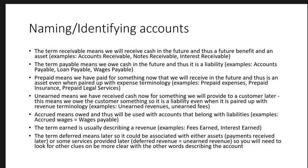'Prepaid' means we're going to pay for something now and receive the benefit in the future, so it's usually an asset even if it's paired up with the word 'expense.' 'Unearned' means we receive cash now and have to provide services or goods later. 'Accrued' means owed — so 'accrued wages' is the same as 'wages payable.' Accrued is usually used alongside liabilities to describe what we're tracking.